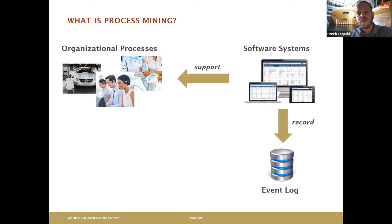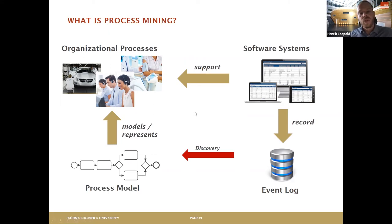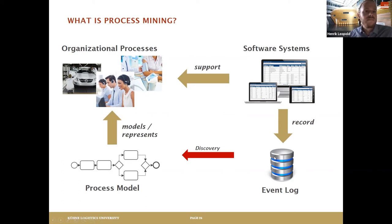The idea is: if we have processes supported by software systems, and those systems record what's happening in these processes, why can't we automatically discover what's going on? What you see in the bottom left corner is a process model — don't be confused by how technical it looks, it's nothing else but a visual representation of the process. We can automatically infer what's happening in our organization by analyzing these logs, which contain a lot of data. That's the idea of discovery — just hit a button and understand how the process is currently running.